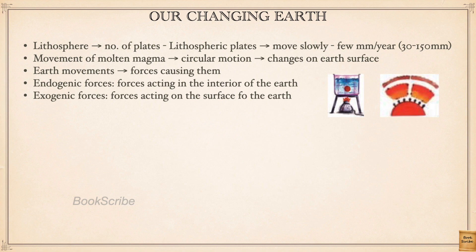How does this magma move? The magma moves in a circular manner. For example, if you take some water in a beaker and boil it and put a paper pellet — take a paper, roll it into a ball and put it inside the boiling water. After some time, when the water starts boiling, the ball moves in a circular motion, then moves to the next place and again moves in a circular motion. This same type of motion happens under the earth's surface.